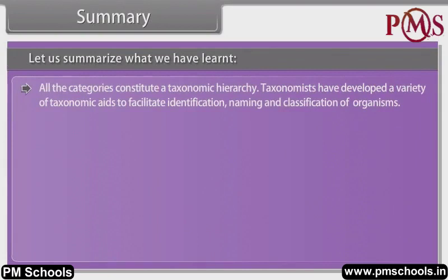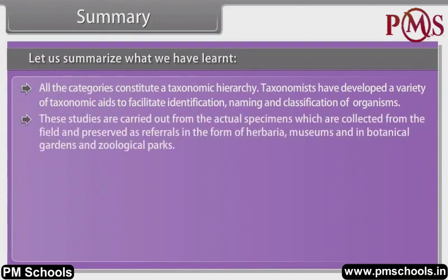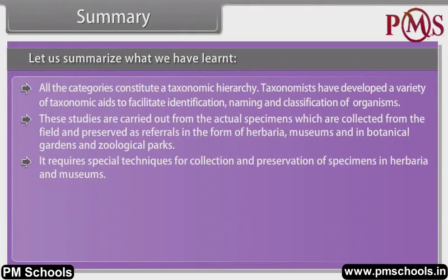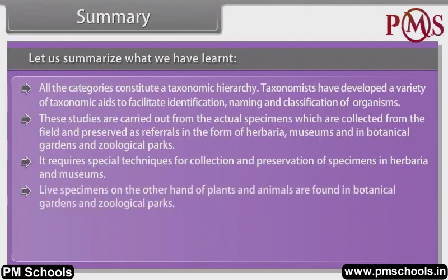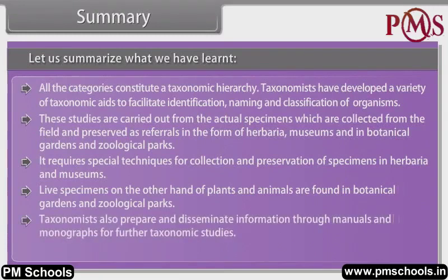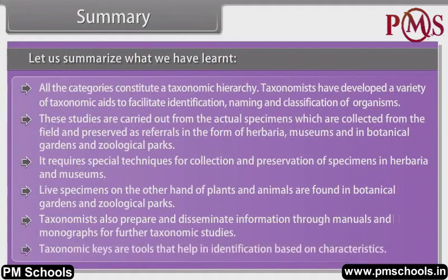Taxonomists have developed a variety of taxonomic aids to facilitate identification, naming and classification of organisms. These studies are carried out from actual specimens collected from the field and preserved as referrals in the form of herbaria, museums, botanical gardens and zoological parks. It requires special techniques for collection and preservation of specimens in herbaria and museums. Live specimens of plants and animals are found in botanical gardens and zoological parks. Taxonomists also prepare and disseminate information through manuals and monographs for further taxonomic studies. Taxonomic keys are tools that help in identification based on characteristics.